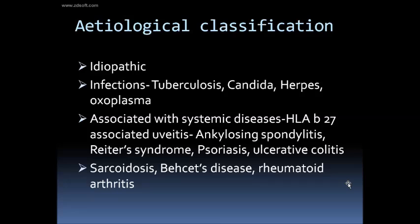Most of the time, uveitis is idiopathic, with no particular identifiable cause. However, various infections including tuberculosis, Candida, herpetic infection, and toxoplasmosis can all cause uveitis. Whether it is a bacterium, virus, fungus, or protozoan, any organism can cause uveitis.